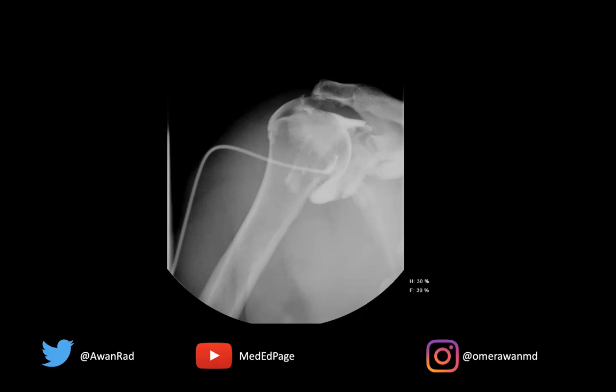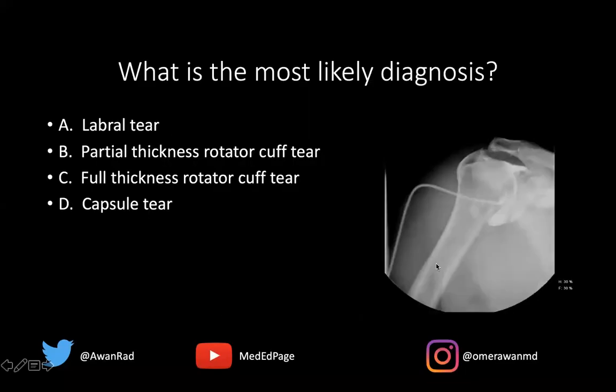Here we have a case, and the question is: what's the most likely diagnosis? Is this a labral tear, a partial thickness rotator cuff tear, a full thickness rotator cuff tear, or a capsule tear? What's the most likely diagnosis here?